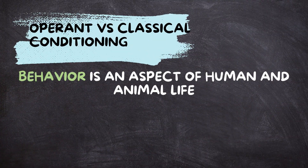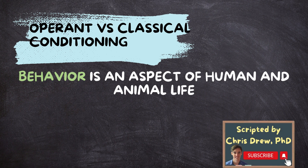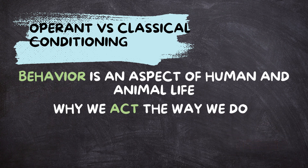Behavior is an aspect of human and animal life, and psychologists have devised various theories to explain why we act the way we do. Two significant theories in psychology are operant conditioning and classical conditioning.